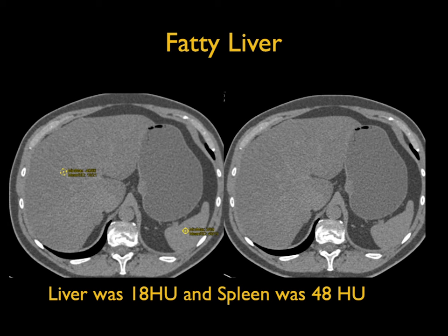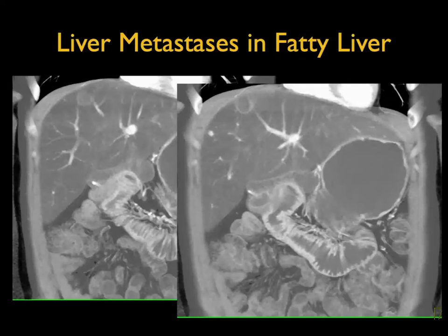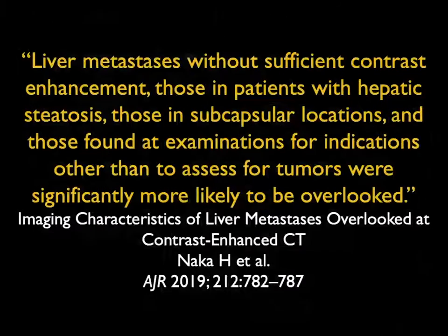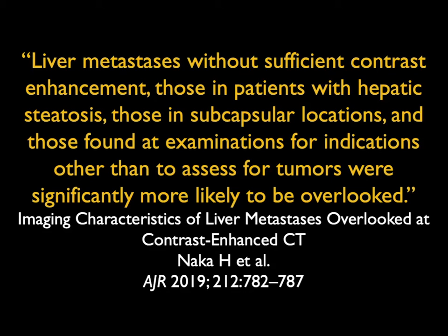Sometimes you can be fooled — for example, what if the spleen was higher attenuation as in sickle cell? But that's typically not going to be a problem. Patients with fatty infiltration of the liver present a challenge: liver metastases can be missed. Particularly hypovascular lesions can be obscured in the setting of fatty infiltration. In this recent article by NACA, liver metastases without sufficient contrast enhancement, and those in subcapsular locations in patients with hepatic steatosis, were more likely to be overlooked.